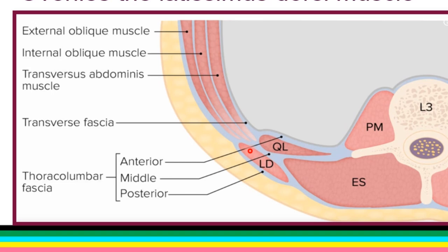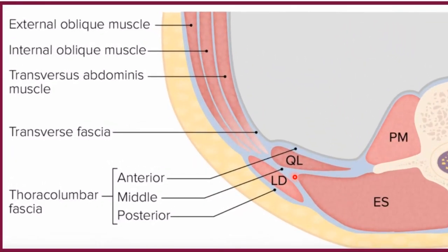We also see the posterior layer overlying the latissimus dorsi, and this layer covers the latissimus dorsi muscle. For the middle layer of thoracolumbar fascia, it encloses the quadratus lumborum muscle alongside the anterior layer. With the posterior layer, the middle layer also encloses the latissimus dorsi muscle and extends to the back to enclose other muscles, including the core muscles of the back like the erector spinae.